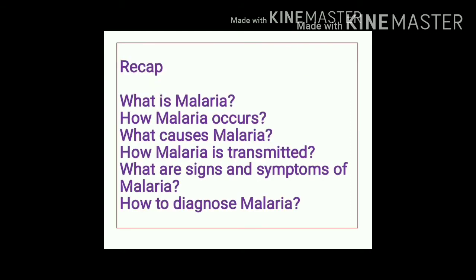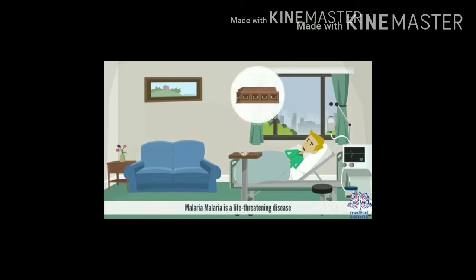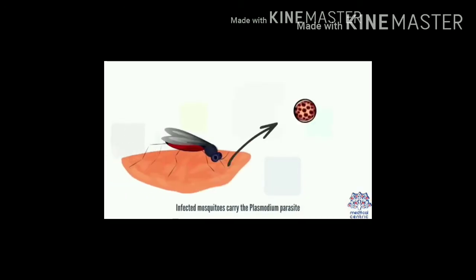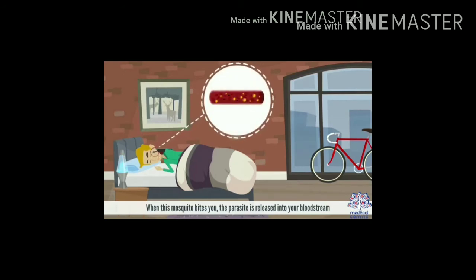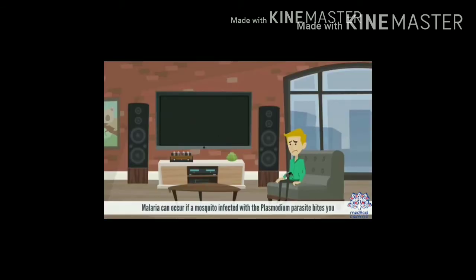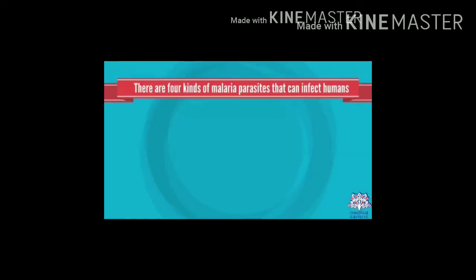As a recap, malaria is a life-threatening disease typically transmitted through the bite of an infected Anopheles mosquito. When an infected mosquito bites, the Plasmodium parasite is released into the bloodstream. There are four kinds of malaria parasites that can infect humans.